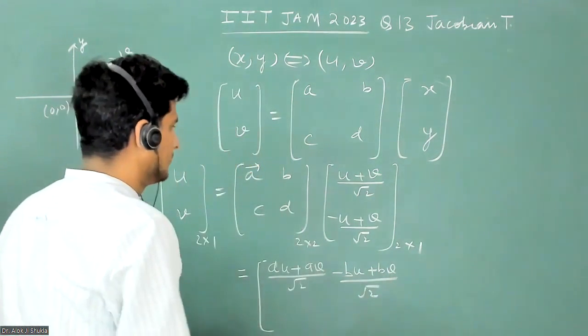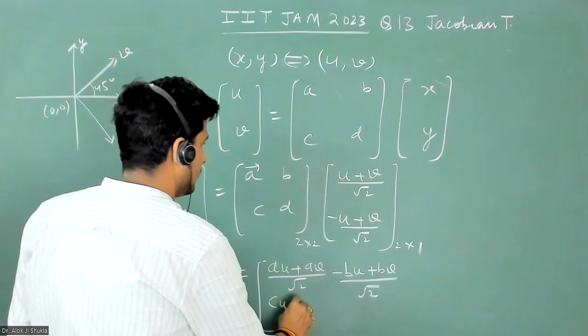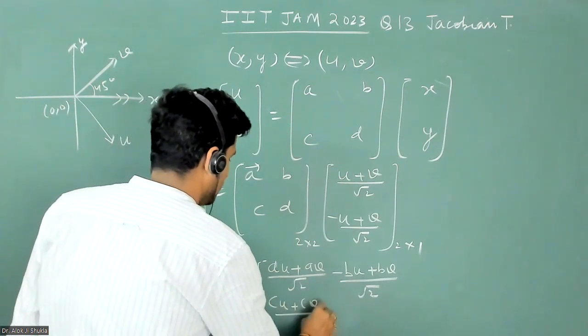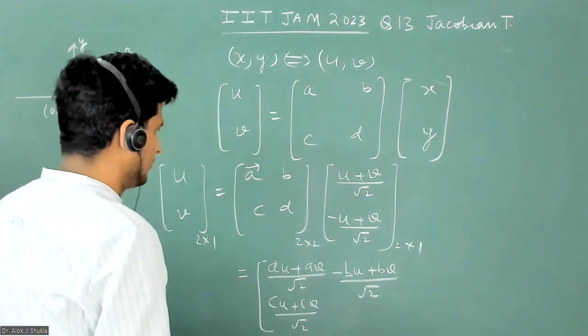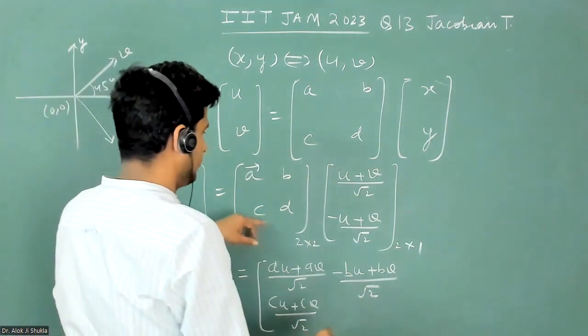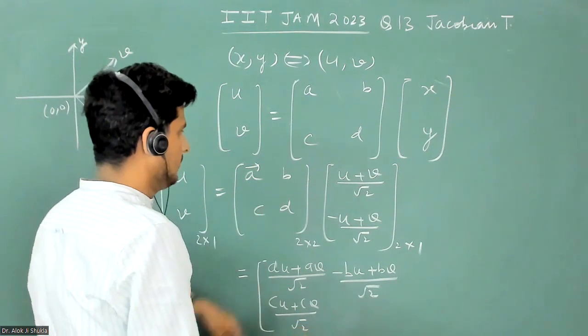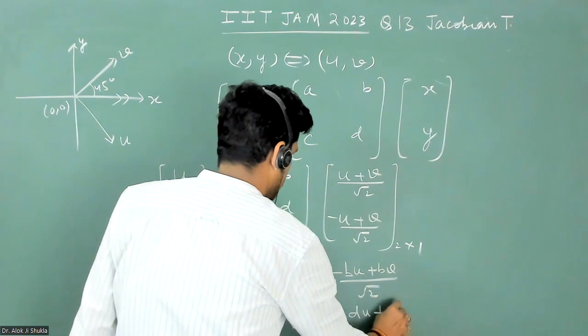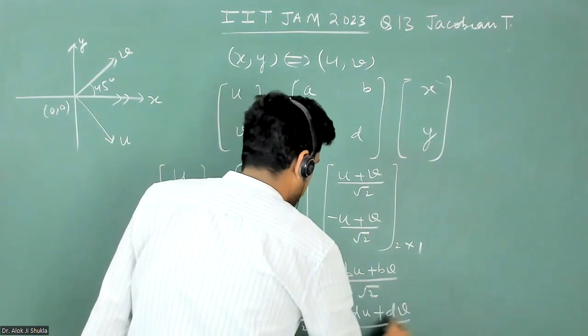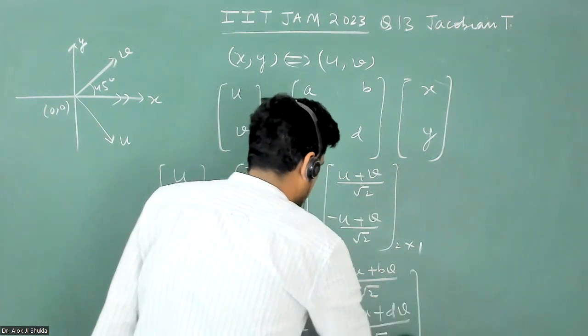And then this term cu plus cv by under root two. And minus du plus dv by under root two.